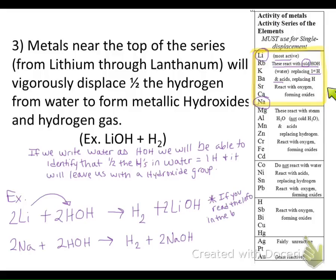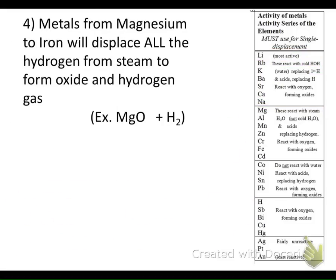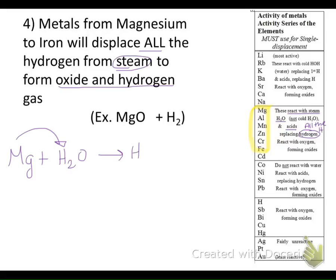Again, if you read the box it pretty much tells you what you're doing — so don't forget the fine print. Metals from magnesium to iron will displace all the hydrogen from steam to form hydrogen gas and an oxide. The steam is important: if you see it in a question, it tells you the reaction will actually happen. These react with steam, not cold water, and they replace all the hydrogens, so we can just write H₂O rather than HOH, producing an oxide and hydrogen gas rather than a hydroxide.